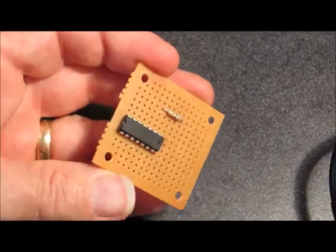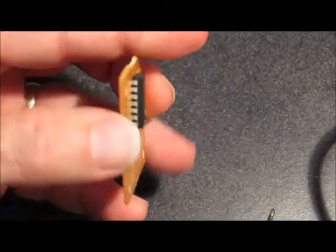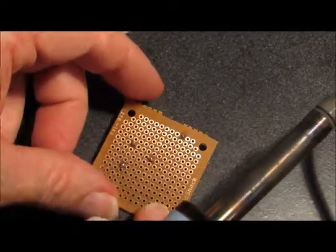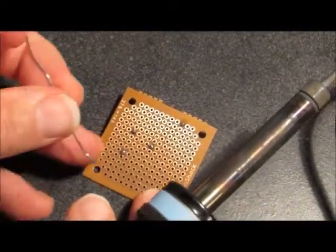Solder the two bent pins, then check that the IC is sitting flush against the board. If necessary, heat one of the two joints up while pressing down on the IC. Once it looks good, solder the remaining pins.